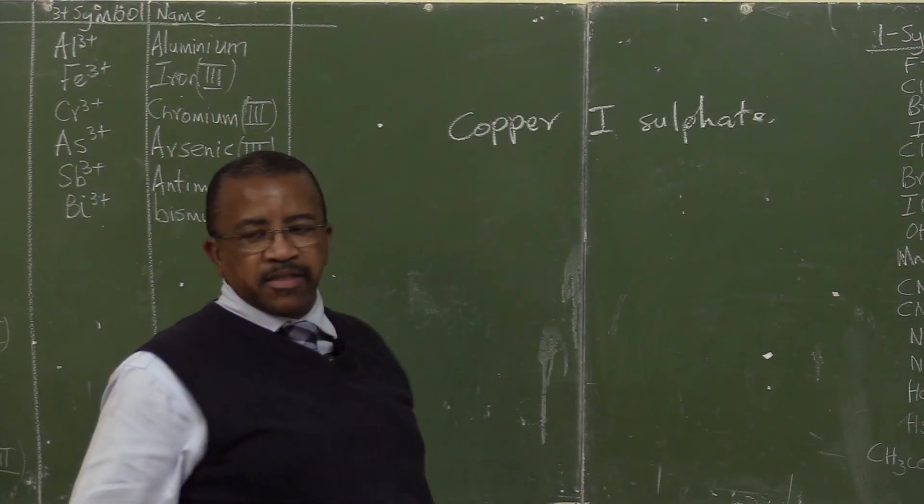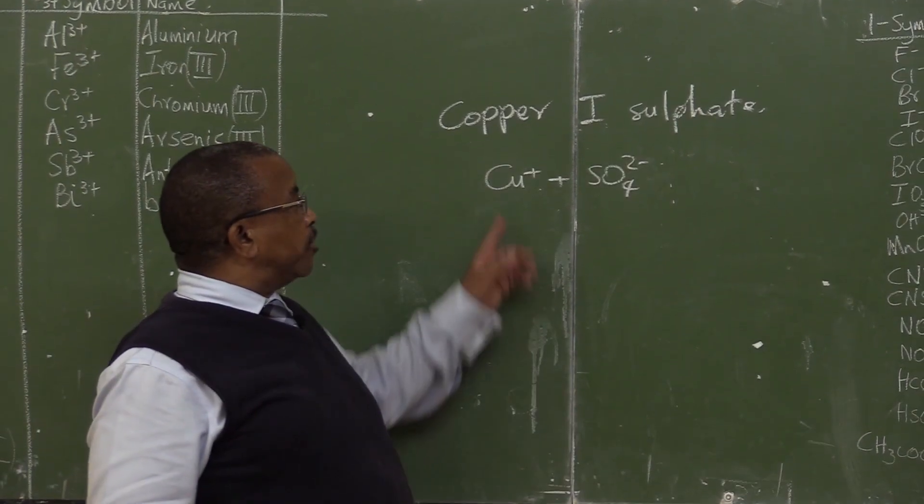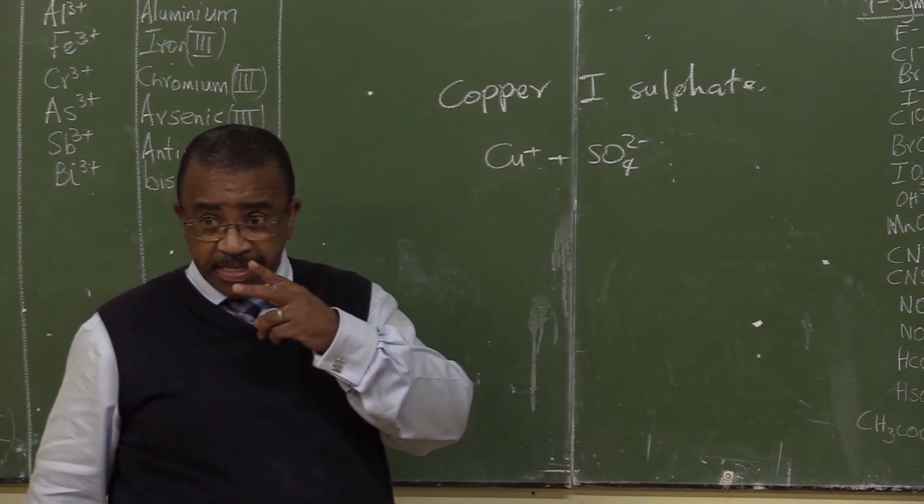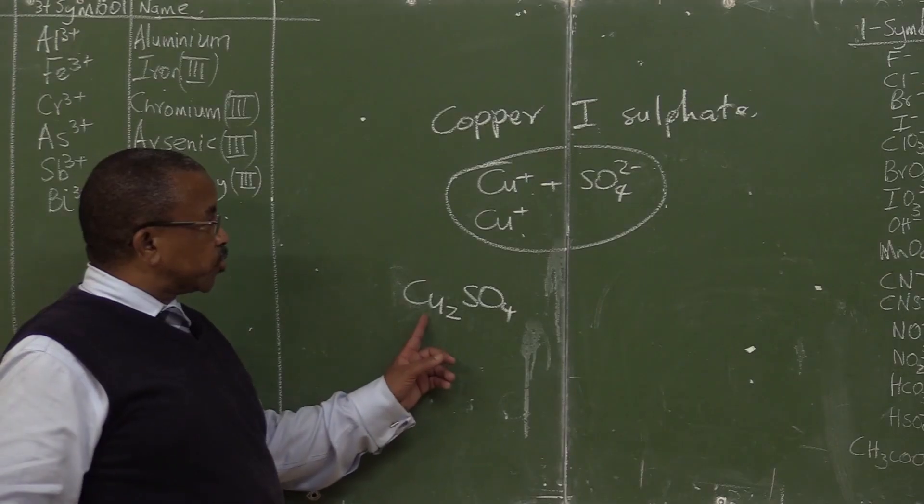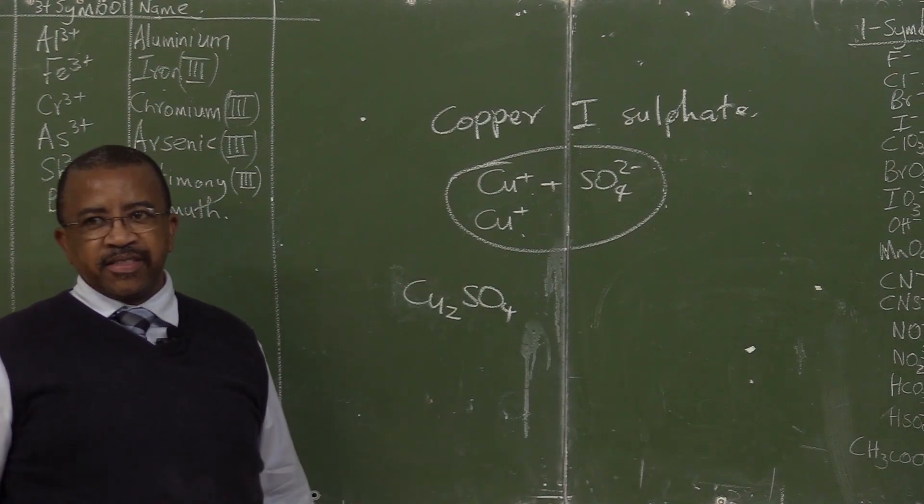Copper 1 sulfate. Kota kesi tinga abosiyu plus ababili. Each charge is plus 1, no minus 2. This is what? Copper 1 sulfate.